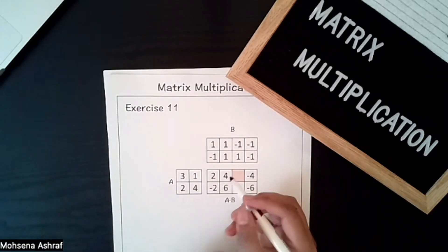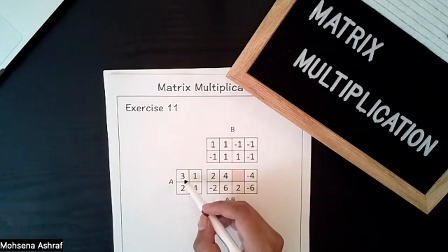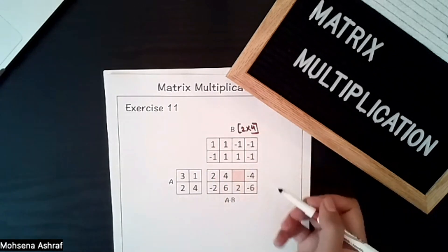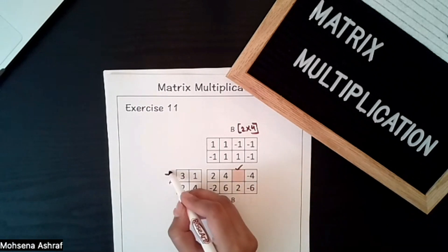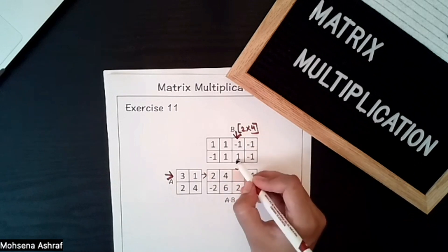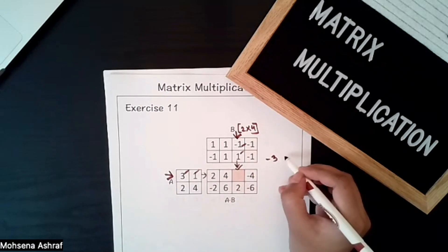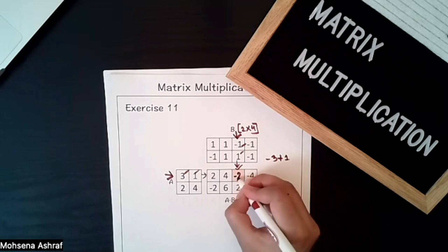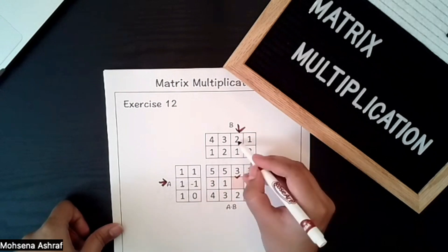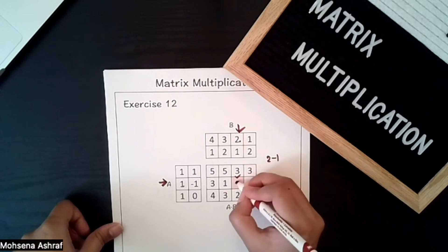Now let's move on to more complex examples. We have different dimension matrices: a 2×2 and a 2×4 matrix. Row comes first and column comes next. For a particular value, we multiply the first row with the third column: 3×(−1) + 1×1 = −3+1 = −2. For the next one, row times column: 1×2 + (−1)×1 = 2−1 = 1.